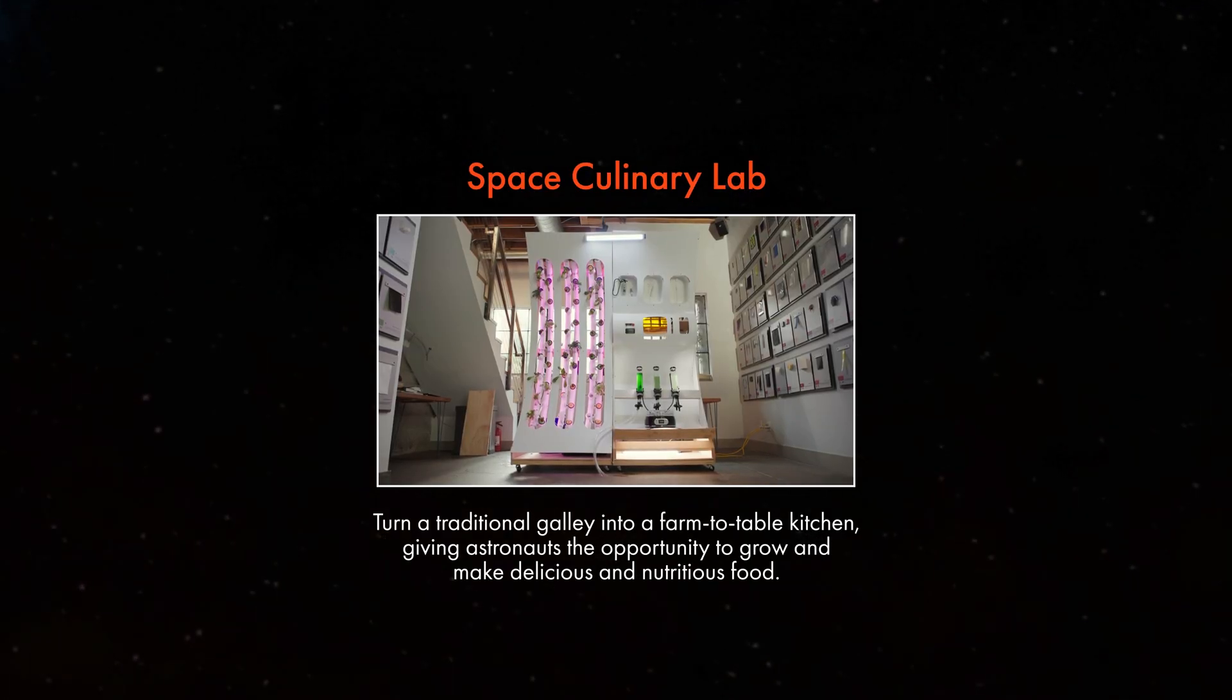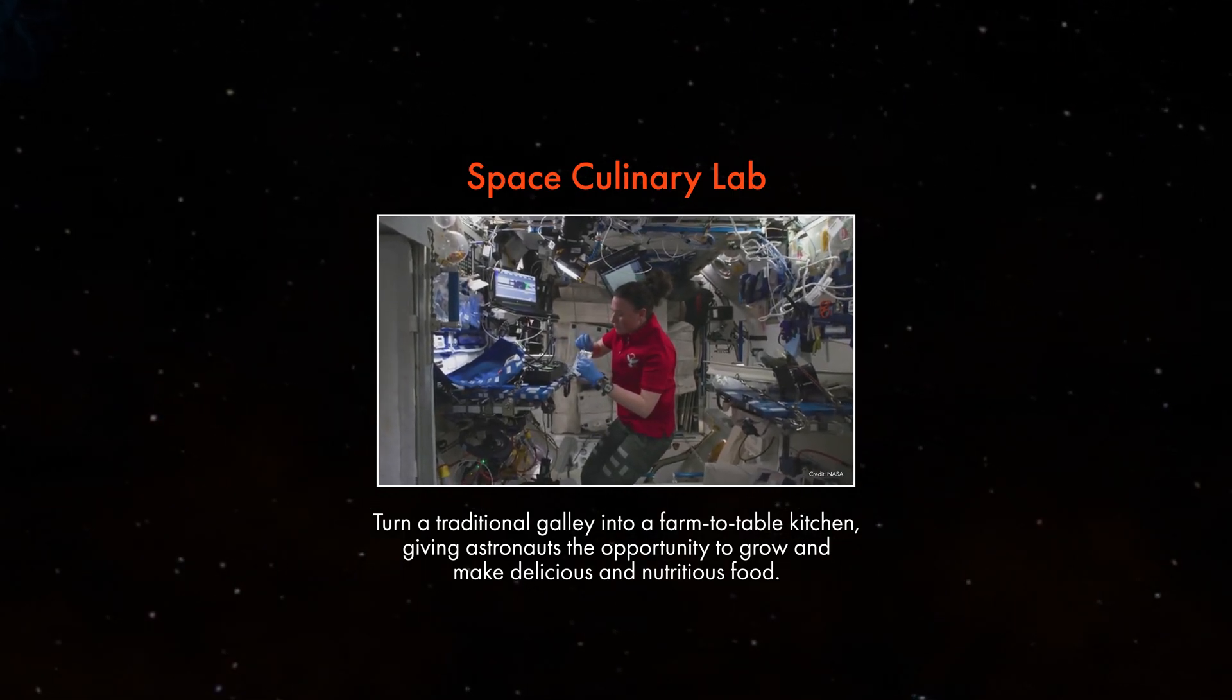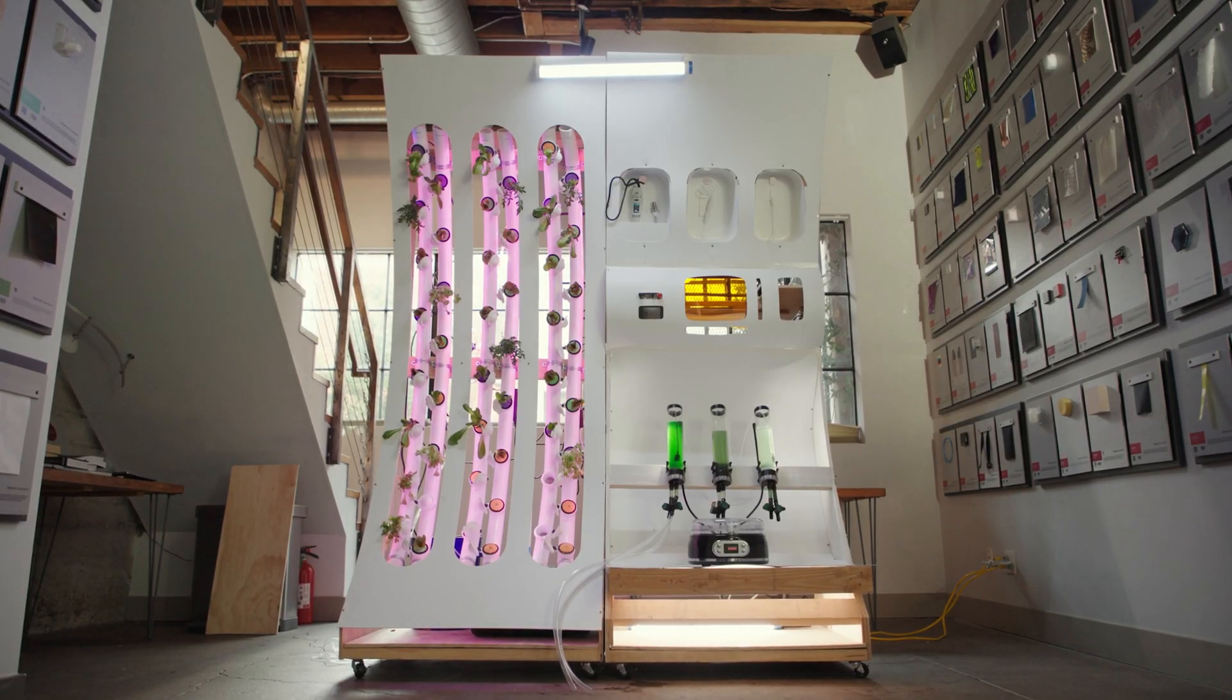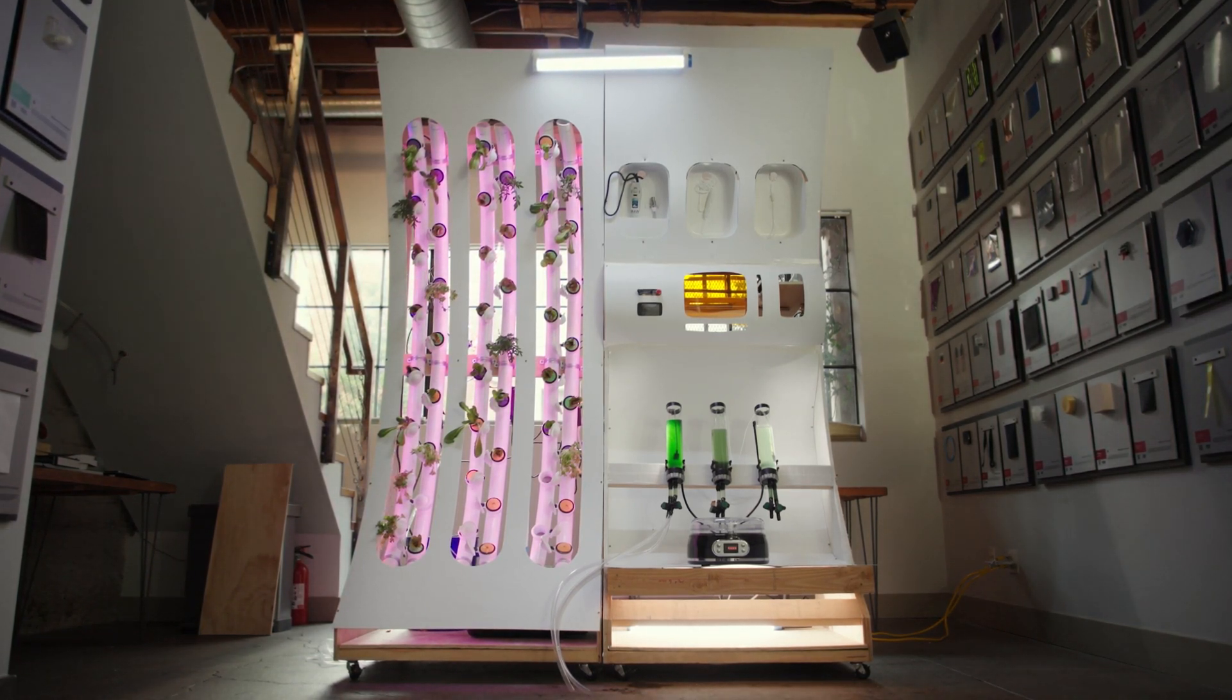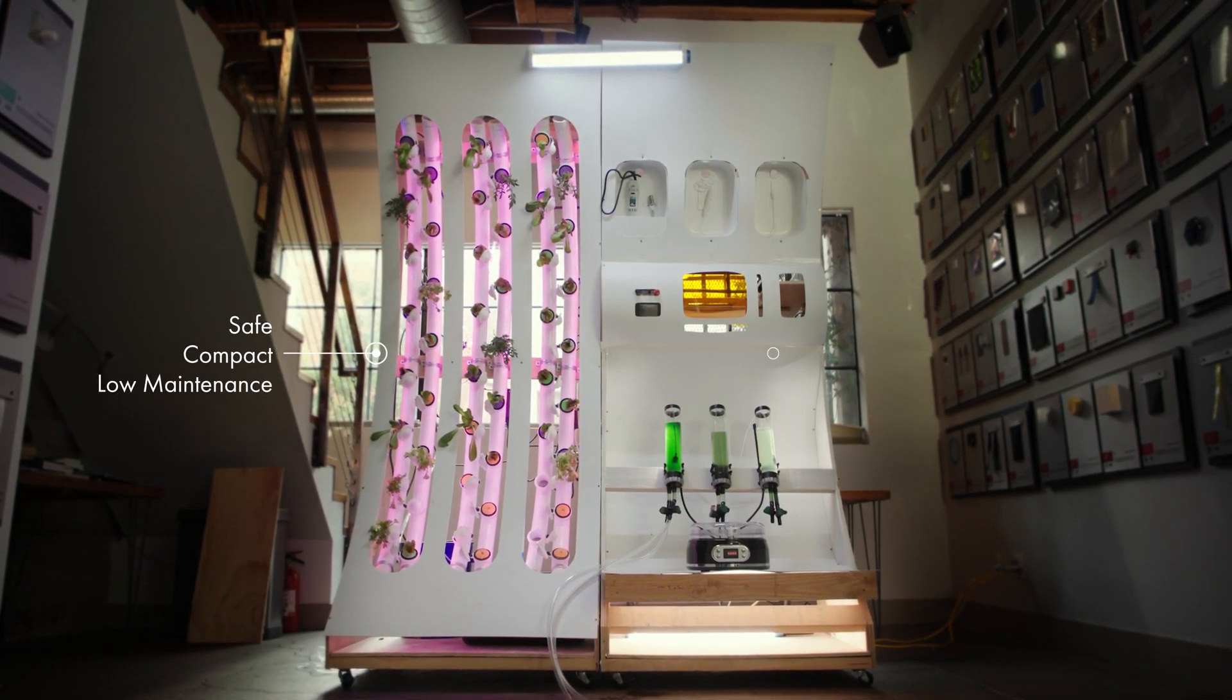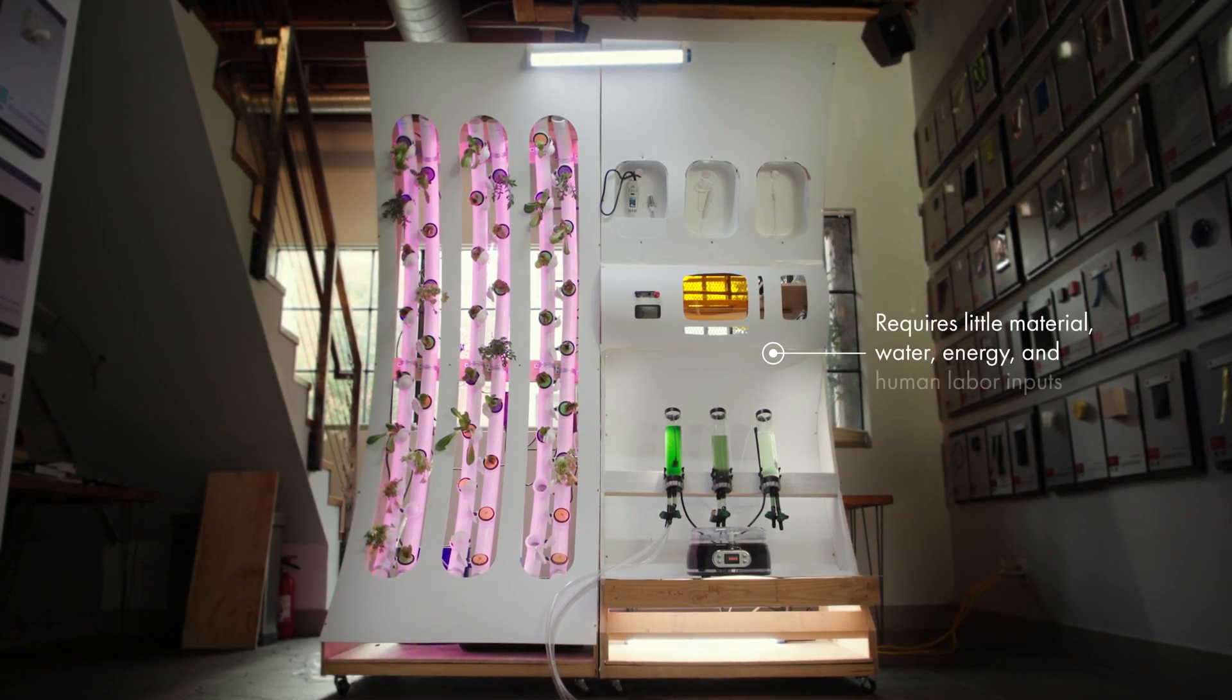The purpose of the Space Culinary Lab is to turn the traditional galley into a farm-to-table kitchen where astronauts are given the opportunity to grow and make food that is both delicious and nutritious. The most important aspect of the lab is the freedom it gives them to make the food they want, however they want it. The lab is a system that is safe, compact, low-maintenance, and requires relatively little material, water, energy, and human labor inputs.